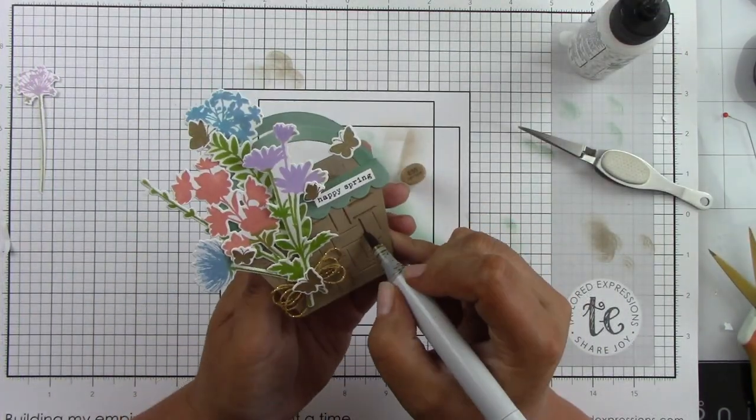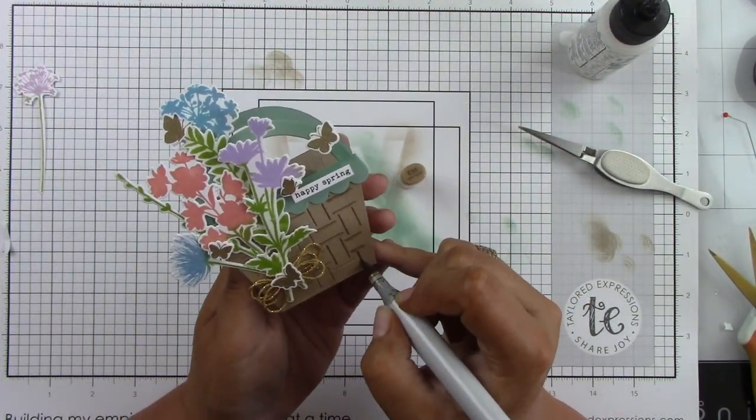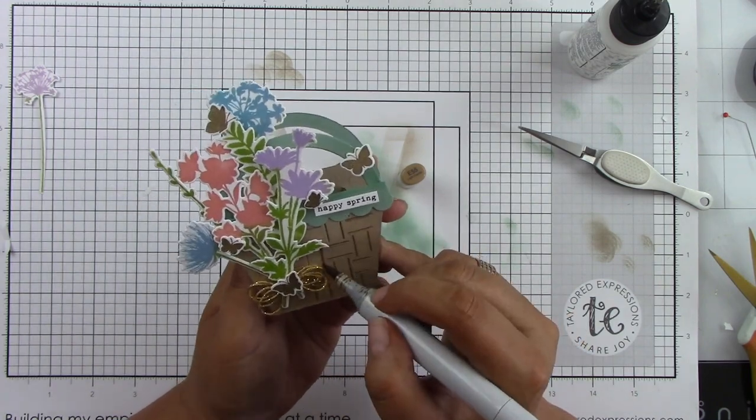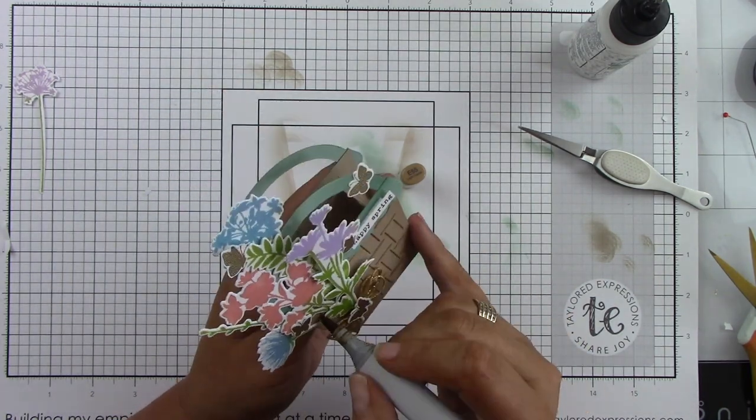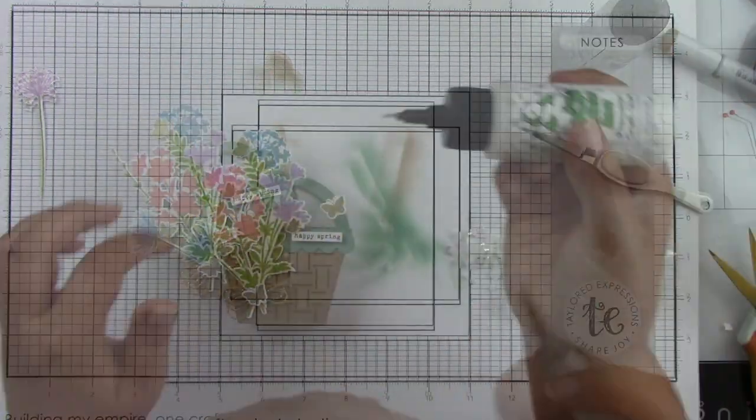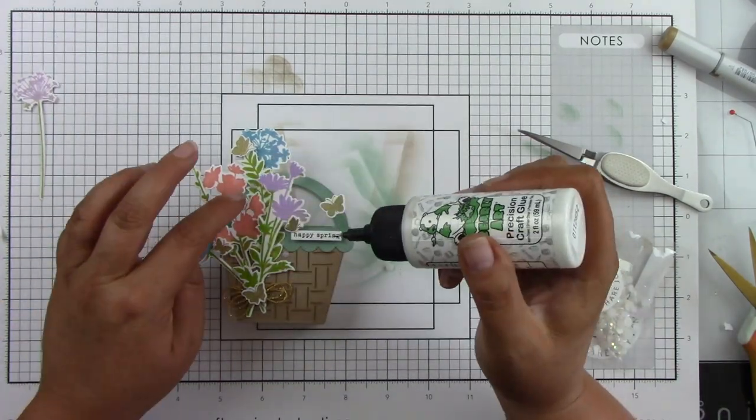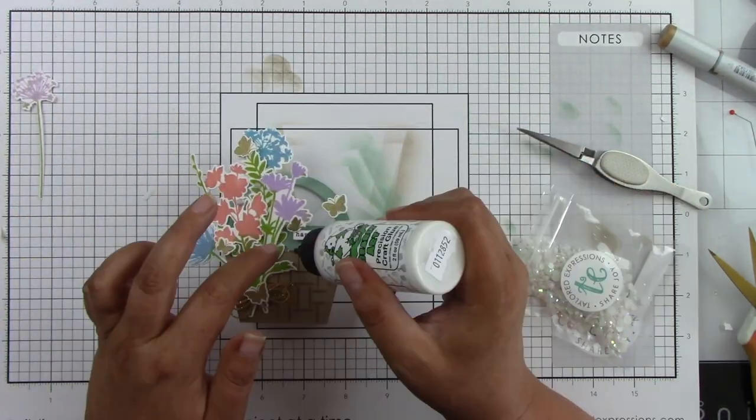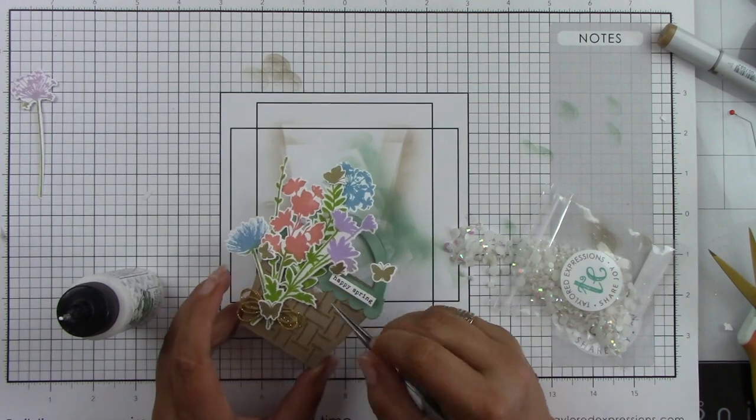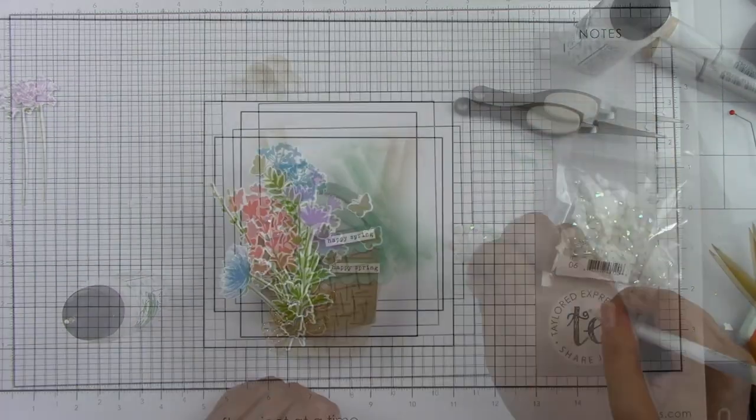Then I'm coming in with a Copic Marker E55, and I'm just kind of highlighting those little marks in the little basket weave because I just felt like it needed a little something extra. And then I'm finishing it off with some white rhinestones, a little bit of bling to this, which is really cute.